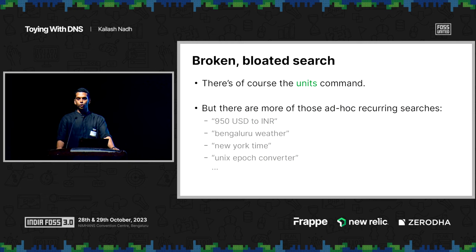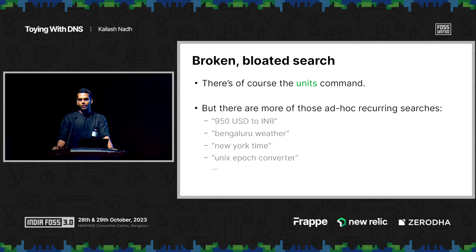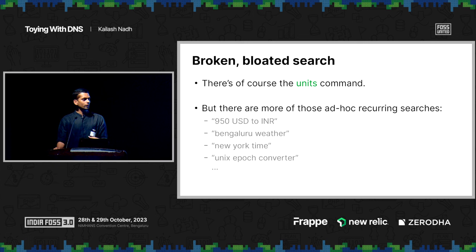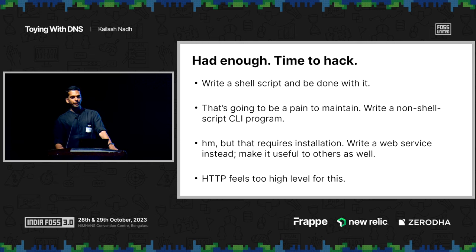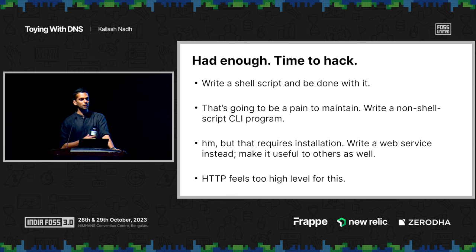There's of course the units command — apt install units or dnf install units — and it does universal unit conversion, but that's only for units. I have a lot of these recurring searches: temperature, weather, unit conversions, currency conversion, etc. So I figured I'd hack it, write a little bash script and be done with it so that I don't have to put these queries into the search engine anymore.